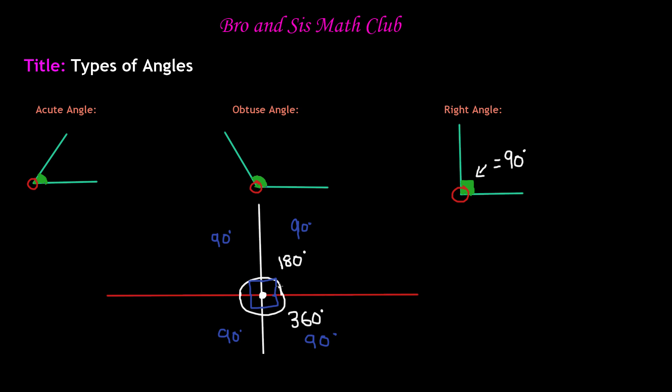So the thing about a right angle, it is exactly equal to 90 degrees, so it makes a perpendicular line over here.